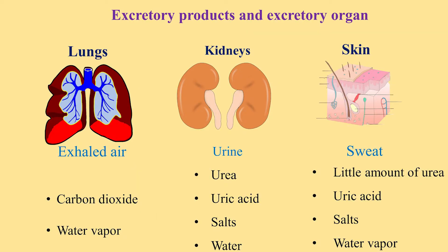Here is a summary of what we have discussed so far. The major excretory organs are lungs, kidneys, and the skin. Exhaled air from lungs contains carbon dioxide and water vapor. Urine from kidneys contains urea, uric acid, salts, and water. Sweat from the skin contains small amounts of urea, uric acid, salts, and water vapor.